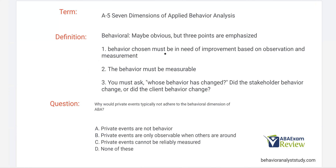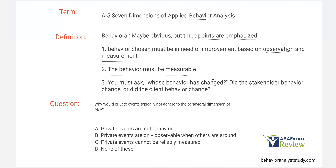Let's start breaking down each one, starting with behavioral. Probably the most obvious one — applied behavior analysis deals in observable and measurable behavior. Three points are emphasized. One, behavior chosen must be in need of improvement based on observation and measurement. We don't do FBAs or choose goals simply based on what a parent tells us. Parents have a long list of things they want improved, but you're not going to make any choice until you actually observe and measure that behavior.